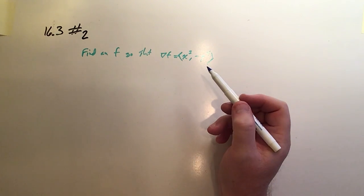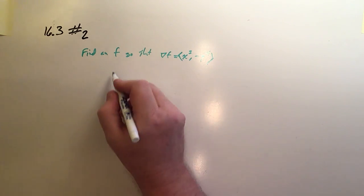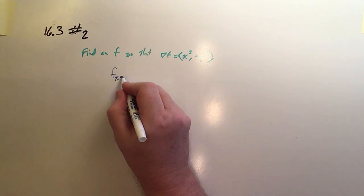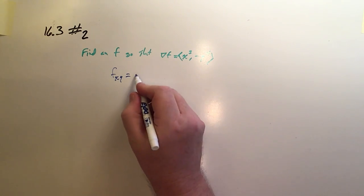So once again, we check the mixed partials. If this is the partial with respect to x, then f_xy would be the first partial of this with respect to y, and that's 0.